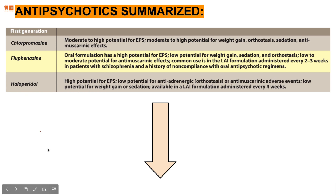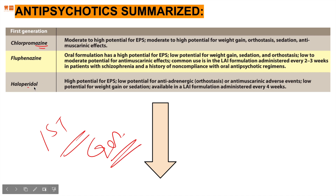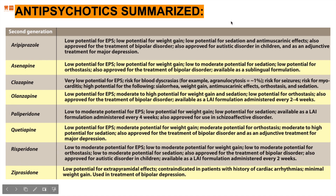Summary charts are provided for both generations. The first chart covers first generation antipsychotics — chlorpromazine and haloperidol, representing low and high potency respectively — with descriptive notes from our references. The second chart covers second generation drugs, the '-apines' and '-idones.' These charts summarize the details explained throughout the lecture and can assist with note-taking.